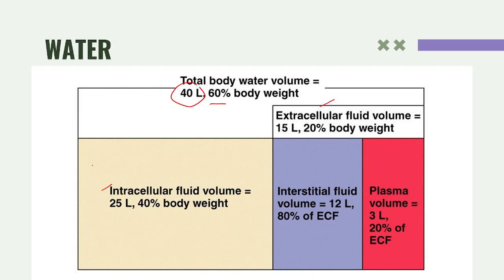Intracellular fluid is about 25 liters or about 40% of body weight, while extracellular fluid volume is around 15 liters or 20% of body weight. The extracellular fluid can be divided into two: interstitial fluid and plasma volume.